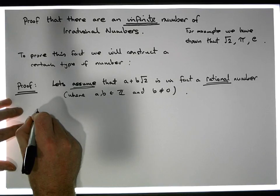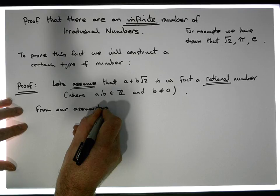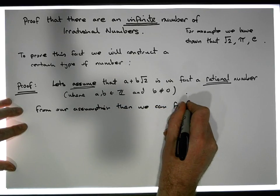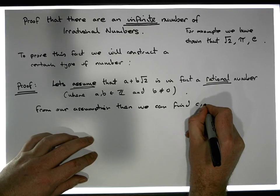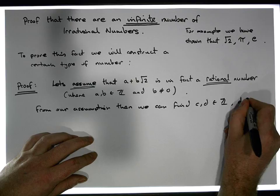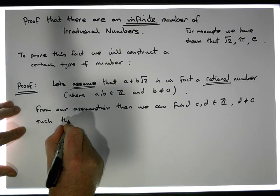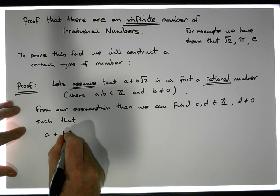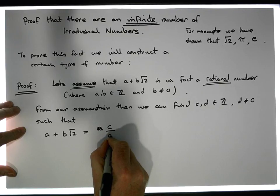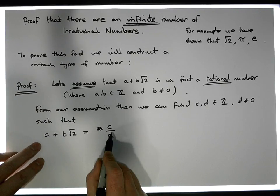From our assumption — we're assuming that a plus b root 2 is rational — well then we can find two other numbers, c and d, that are elements of the integers, where d is not equal to 0, such that a plus b root 2 can be written as a rational number. So what does this tell us? Well, a plus b root 2 can be written as p over q.